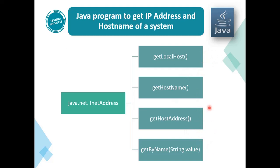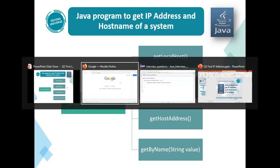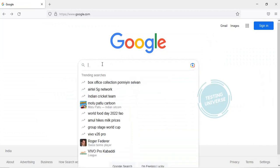We'll be making use of three or four methods to get IP address and host name. This class contains a lot of methods, but to get IP address and host name we'll be making use of only these four methods. Before we start writing the program, I will show you about the InetAddress class.